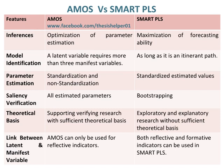Parameter estimation of AMOS is based on standardization and non-standardization, whereas parameter estimation of SMART PLS is based on standardized estimated values. Saliency verification of AMOS is based on all estimated parameters, whereas saliency verification of SMART PLS is based on bootstrapping. The theoretical basis of AMOS supports verifying research with sufficient theoretical basis, whereas SMART PLS supports exploratory and explanatory research without sufficient theoretical basis.